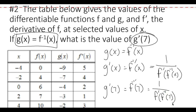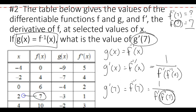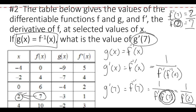We need to find f⁻¹(7). That means we need an x value such that f(x) = 7. Looking at the table, f(2) = 7, so f⁻¹(7) = 2. Replacing that piece, we have 1 over f'(2). Going to the table where x = 2, f'(2) = 1. So we get 1 over 1, and the final answer is 1.